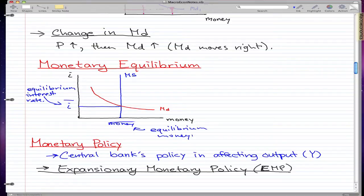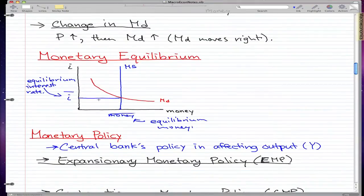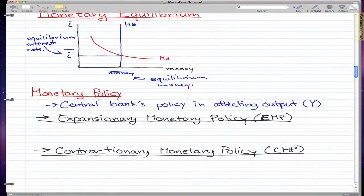This is what I want to show you about monetary equilibrium - we have MS as the static blue line and MD as the curve. Monetary policy is all you need to know for this introductory economics course - it's a central bank's policy in affecting output, or Y.